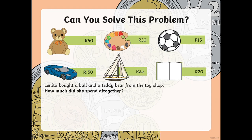Right — can you solve this problem? Now I need you to pick up your pencil and we are going to do our first problem solving sum together. Our sum says: Lanita bought a ball and a teddy bear from the toy shop. How much did she spend altogether? We need to first see how much each item costs. A ball is 15 rand and a teddy bear is 50 rand. Because the teddy bear costs more, I'm going to put that value down first — so 50 rand plus 15 rand.